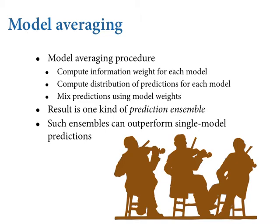Then you compute the distribution of predictions for each model just like you've been doing — sim, link, whatever you want to do, same procedure. And then you mix them in the right proportions. You could do this manually — in previous iterations of this course I was cruel and did make people do it manually. But I now have a utility in the rethinking package called `ensemble` that automagically does these steps for you.